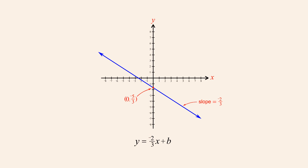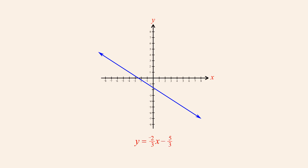And since the y-intercept is (0, negative five-thirds), we set the value of b to negative five-thirds. So the equation for this line written in slope-intercept form is y equals negative two-thirds x minus five-thirds.